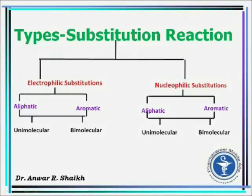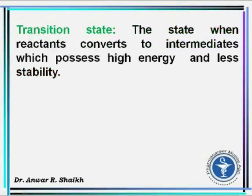Substitution reactions are of the following two types: electrophilic substitution and nucleophilic substitutions, which may be aliphatic or aromatic, and unimolecular or bimolecular. Transition state: the state when the reactant converts to intermediates, which possesses high energy and less stability.